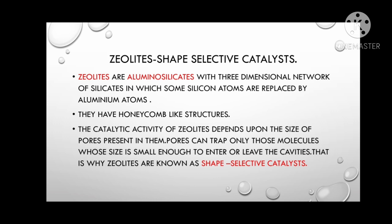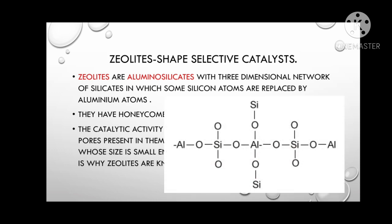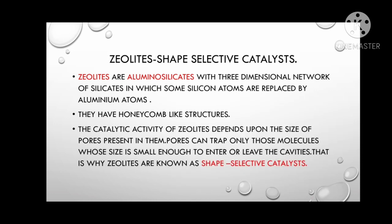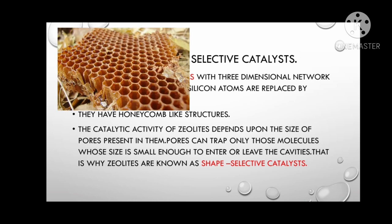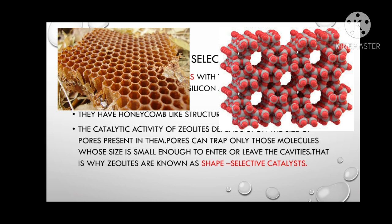Zeolites are aluminum silicates with a three-dimensional network of silicates in which some silicon atoms are replaced by aluminum atoms. These are SiO4 units arranged in a three-dimensional structure. Zeolites have a honeycomb-like structure.